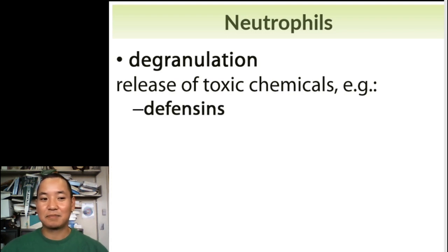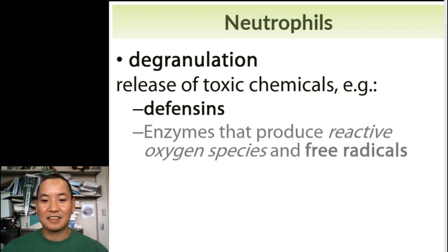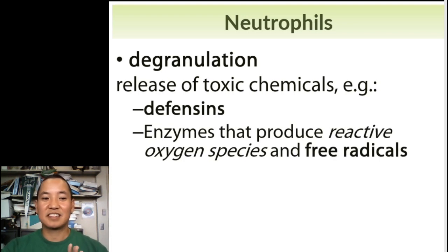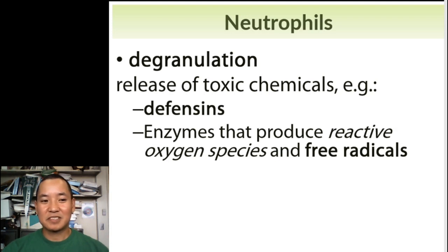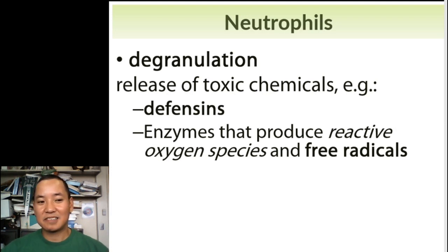those proteins that put holes in pathogens, and enzymes that produce something called reactive oxygen species. You might have heard of things called free radicals. If you've taken chemistry or organic chemistry, you know what a free radical is. In a typical stable chemical, electrons come in pairs. But with free radicals, you have an unpaired electron.